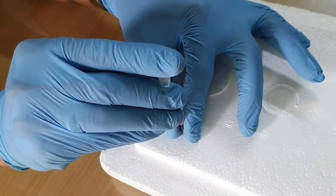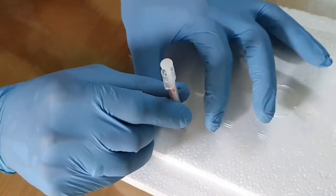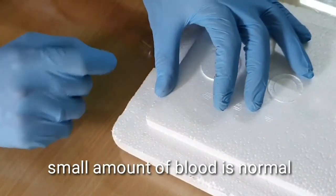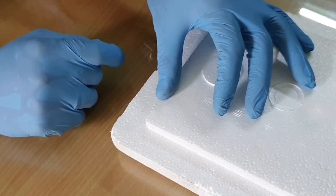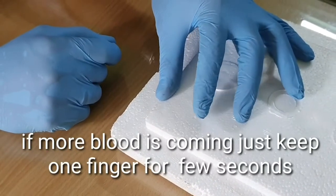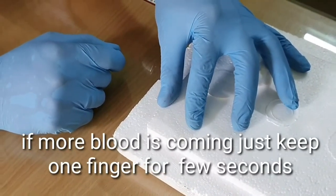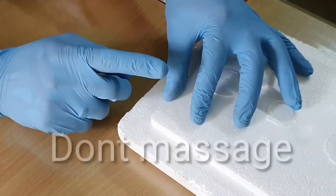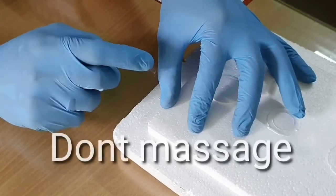Remove also straight. There can be a small amount of bleeding. If at all there is bleeding, what you need to do is just keep your finger there for about a few seconds. That will make the bleeding stop. And always remember, you are not supposed to massage, not supposed to massage.